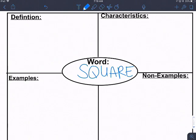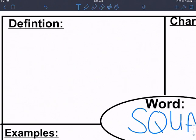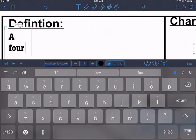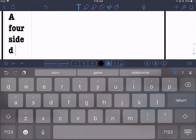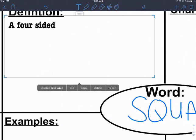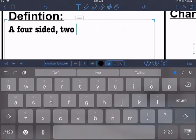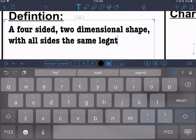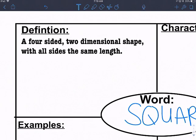So let's start with the definition. There's a lot of definitions of the word square, but we're going to go with a four-sided, two-dimensional shape with all sides of the same length. I'm just trying to put in as much as I know about squares right now. Four-sided, two-dimensional shape, all sides of the same length. So there's a definition for the word square.